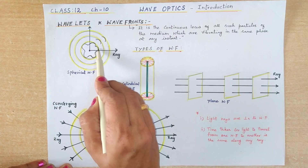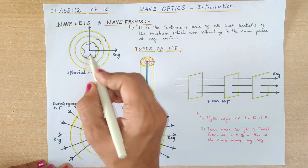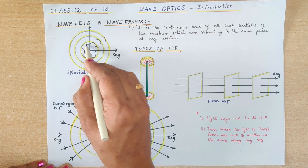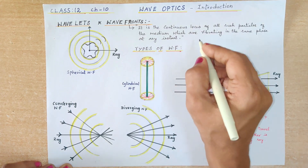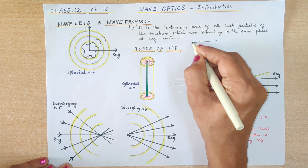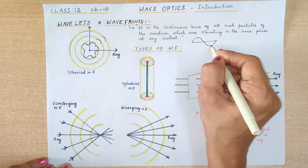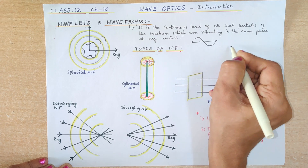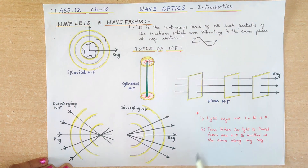The particles which are in the crest will experience the maximum upward displacement, hence they are all in the same phase. In the similar way, the particles which are in the troughs will experience the maximum downward displacement. All the particles in the trough will be in the same phase, and all the particles in the upward direction (crest) are also all in the same phase.